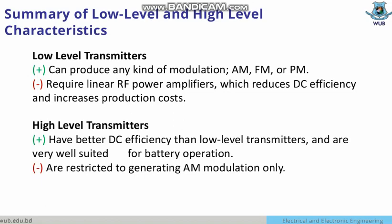The negative aspect of low-level transmitters is that they require a linear RF power amplifier, which reduces DC efficiency and increases production costs. High-level transmitters, on the other hand, have better DC efficiency than low-level transmitters.